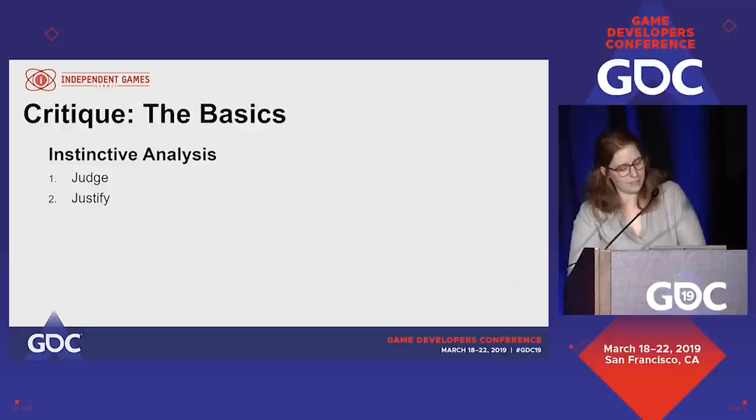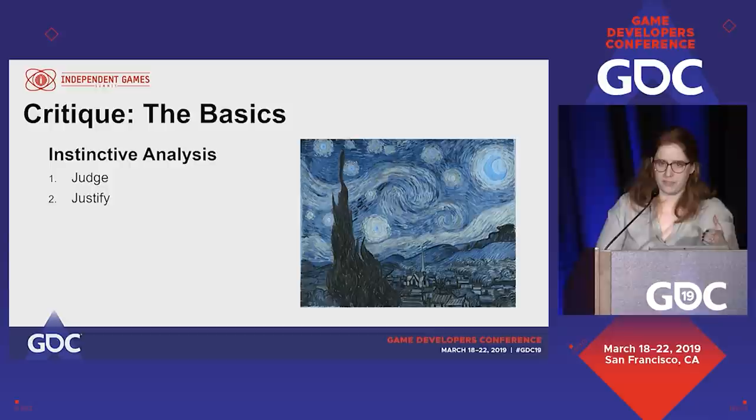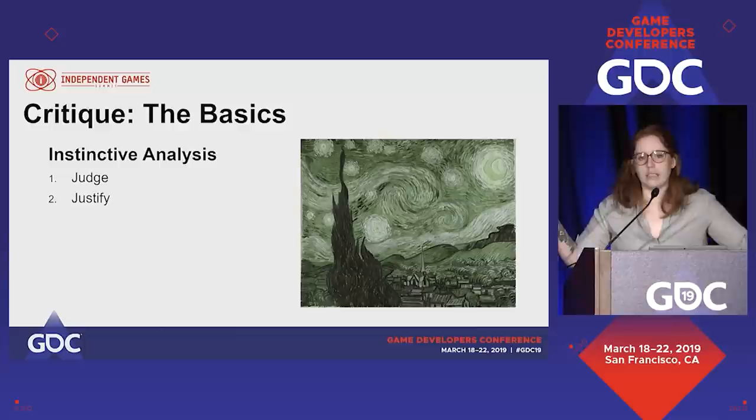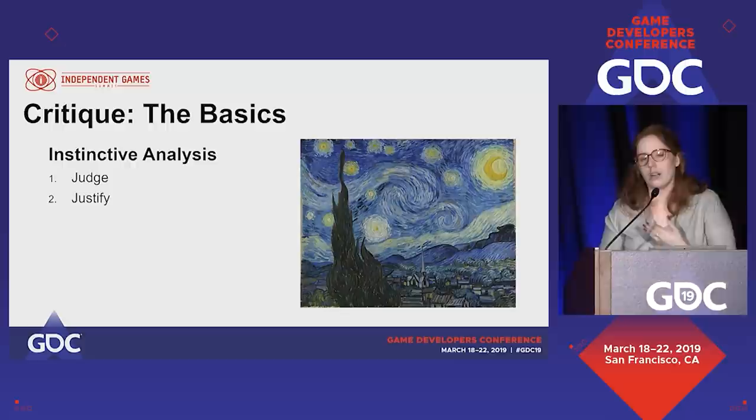This can be valid — there are plenty of times when this does merit valid feedback. But you might see an image and offer the feedback that it's too blue, and so you or your artist fix it. It's green now. Problem solved — or is it really? Maybe what you meant was that more colors were needed. So it's important to know what you're looking for when you're critiquing an image.